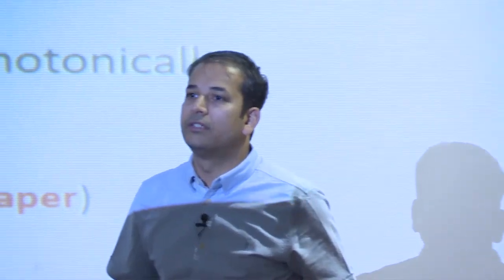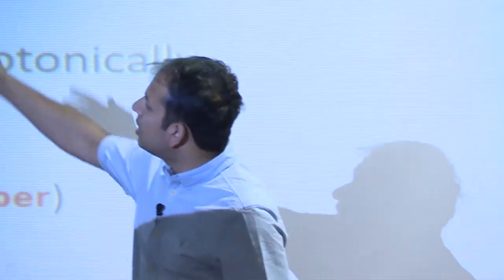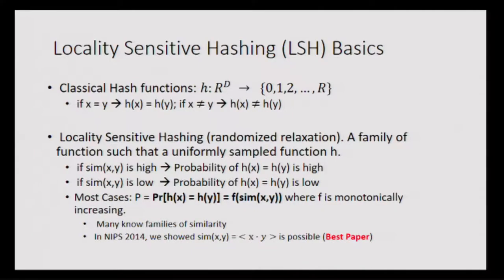How many of you know what locality sensitive hashing is? So basically, in computer science the concept of a hash function is: you have some object in some space R^d and you want to take a mapping of this object to some discrete space. The typical hashing property is that if x equals y you want the hash value to be equal, and if x is not equal to y you generally want the hash to be different. This is used for indexing purposes like Java hash maps.